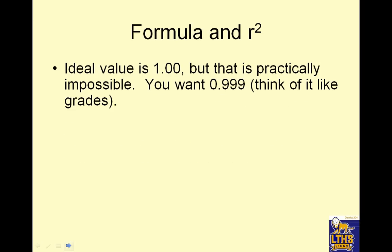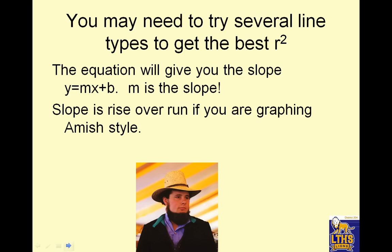Formula R squared. The ideal value for R squared is 1.00, but that is practically impossible. You want it to be 0.99. So if you think of it like grades, you want a 99% or 98%. If it's less than 90%, less than 0.90, you did something wrong. You may need to try several line types to get the best R squared value. So what that means is you check to see whichever one has the best R squared value, and that's typically what you're going to go with.